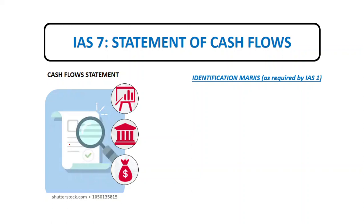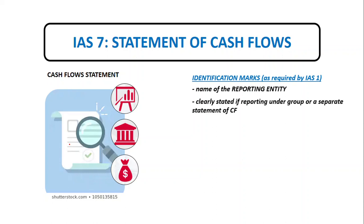IAS 1 Presentation of Financial Statements requires certain identification marks for the cash flow statement. One is the name of the reporting entity, similar to the income statement and balance sheet. It must clearly state whether we are reporting under a group of financial statements or a separate financial statement. It must also contain the title of the report — within the complete set of financial statements we have the statement of financial position, statement of comprehensive income, cash flow statement, statement of changes in equity, and notes to the financial statements.